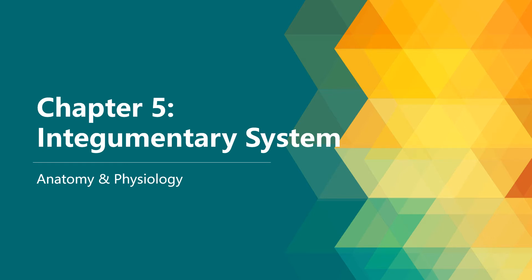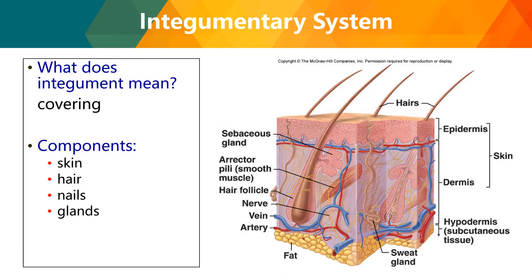Today I'll be discussing Chapter 5, which is about the integumentary system. The integumentary system consists of the skin and accessory structures like your hair, glands, and nails. Integument means covering. The basic two layers are your epidermis and your dermis, and below it would be your hypodermis or subcutaneous tissue, where you will find fat deposits.